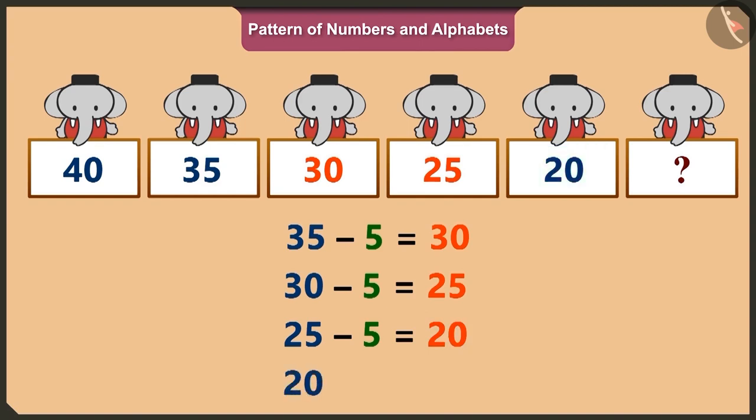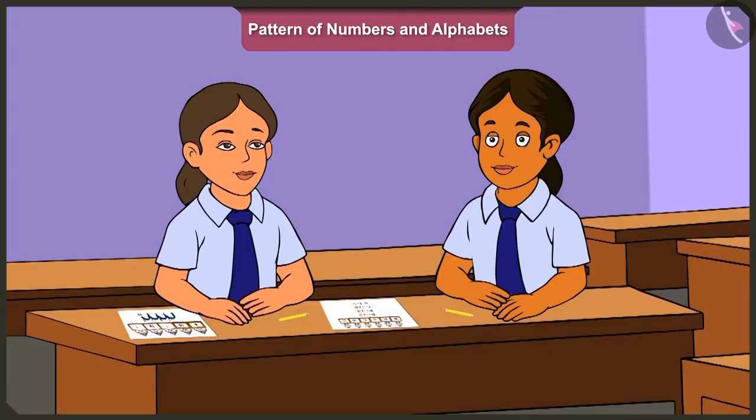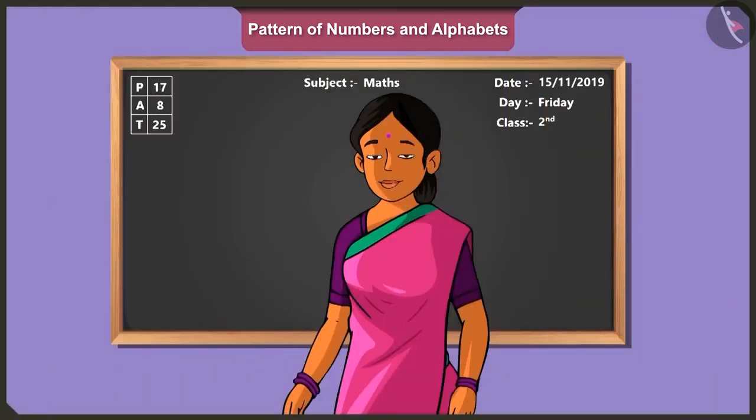Hmm. And on subtracting five from twenty, we get fifteen. Now, let's go. Okay.